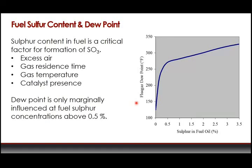Dew point is only marginally influenced when the fuel sulfur concentration goes above 0.5 percent or 5,000 ppm. In the graph showing dew point temperature versus sulfur content of fuel, below a half of a percent is where you get the largest rise. Once you get above a half a percent, the dew point is still going up, but at a very slow rate — so this lower range is the area of most concern when talking about sulfur content influencing the formation of SO3.